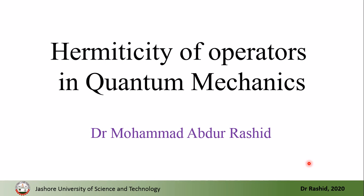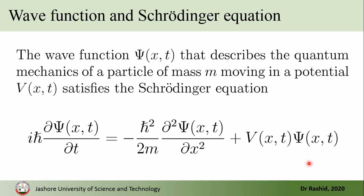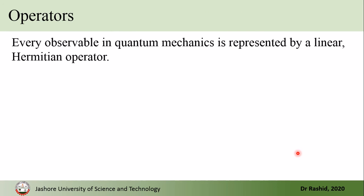Assalamu alaikum. Today we shall talk about the Hermiticity of quantum mechanical operators. In quantum mechanics, the system is described by the wave function psi, and psi satisfies the Schrödinger equation. This is the Schrödinger equation of a quantum mechanical particle of mass m moving in a potential V. Psi contains all the information about the system.